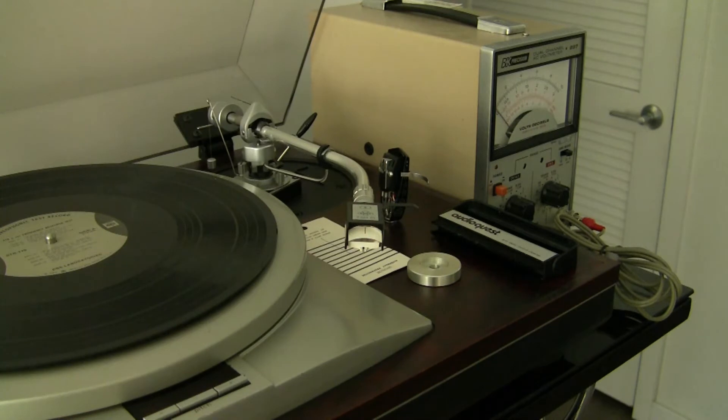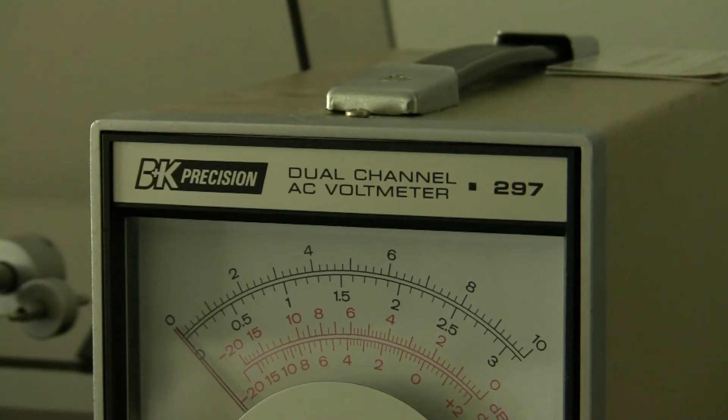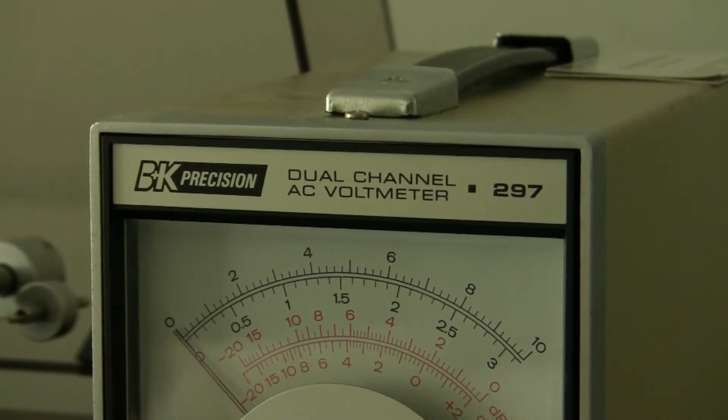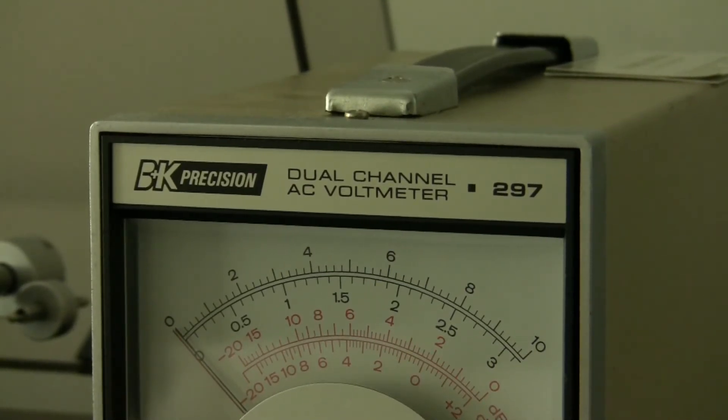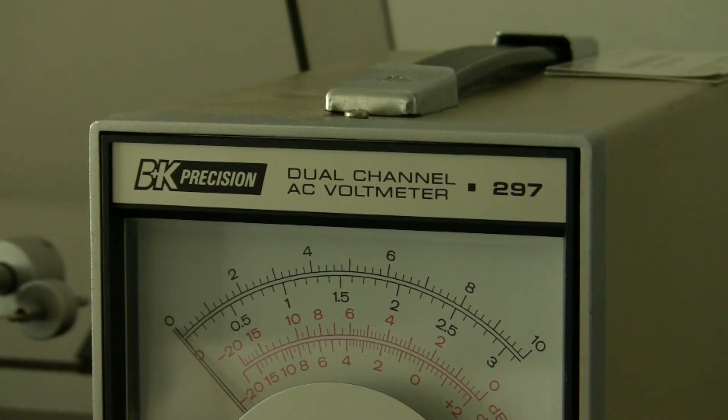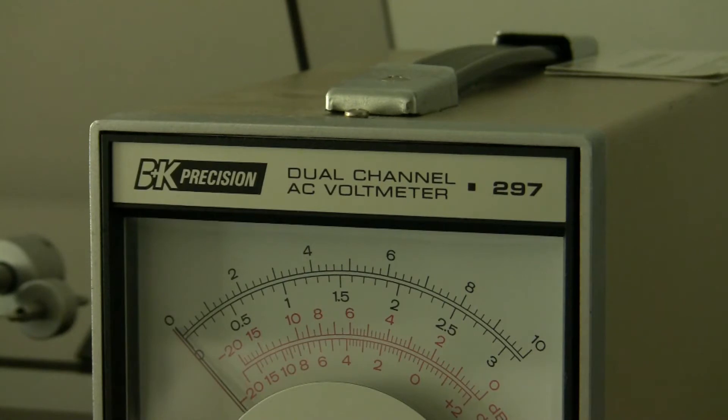What we're going to do now is familiarize ourselves with the tool I'm going to use and what it brings to the party. I watched some YouTubers while they were working on symmetric power supplies and other calibration tools, and they're using this BK Precision dual-channel AC voltmeter 297.